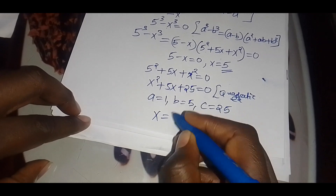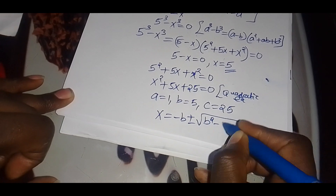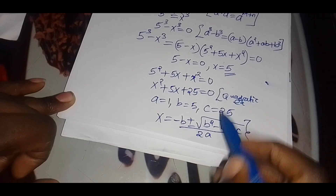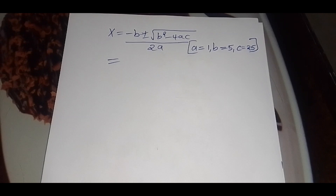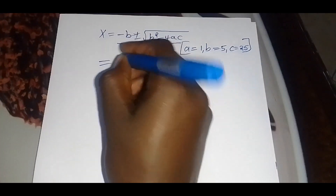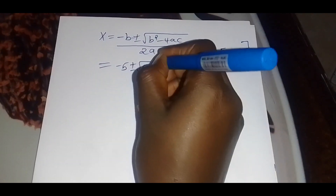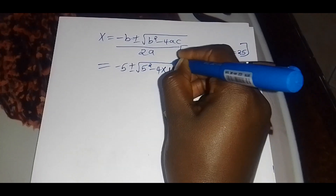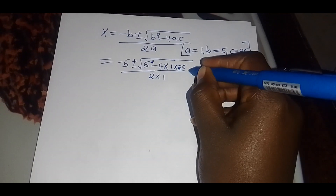We apply the quadratic formula: x equals negative b plus or minus the square root of b squared minus 4ac, all divided by 2a. Substituting our values, we get negative 5 plus or minus the square root of 5 squared minus 4 times 1 times 25, divided by 2 times 1.